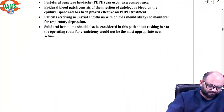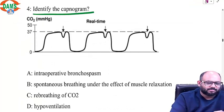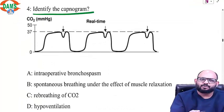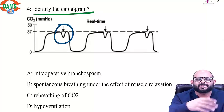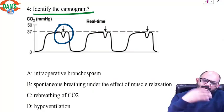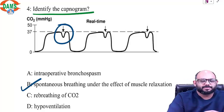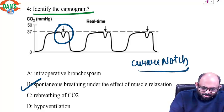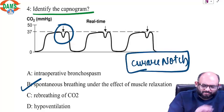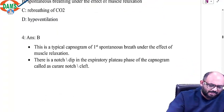Next, identify the capnogram. Whenever you look at a capnogram and find a notch in the expiratory phase, that means the patient is trying to breathe under the effect of a muscle relaxant — that is spontaneous breathing under muscle relaxant, called the curare notch. We have already discussed all types of capnograms and how to interpret them.